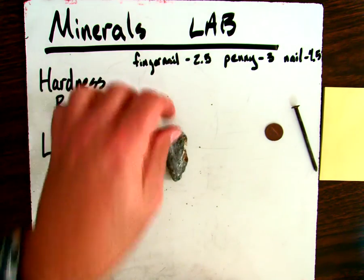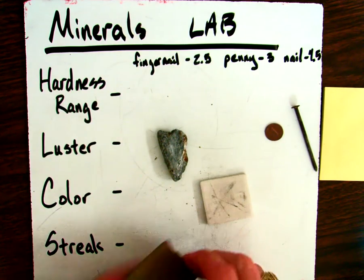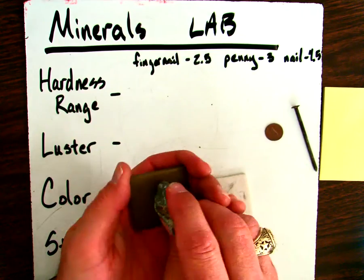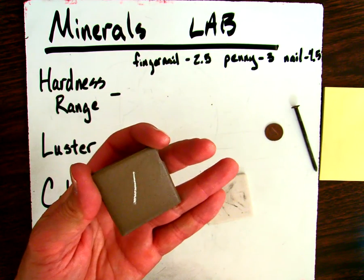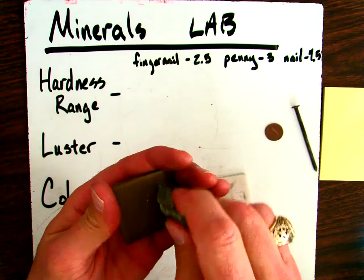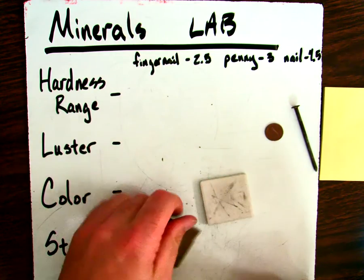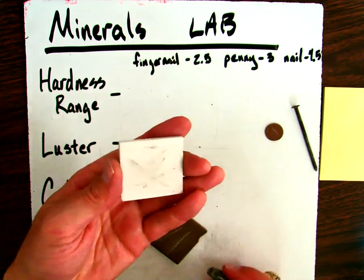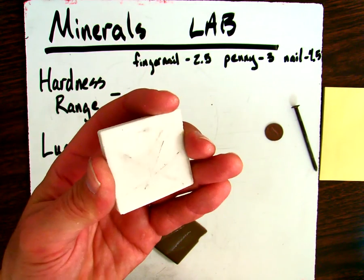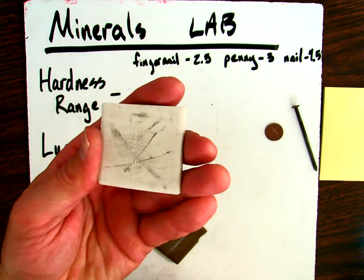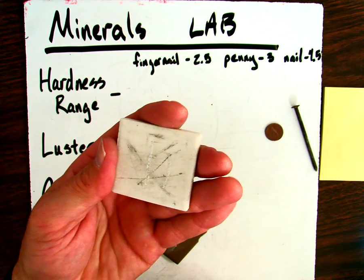And the last thing we're going to test is our streak using our streak plates. We'll go ahead and test it on the brown plate first. You can see a nice streak there. And let's go ahead and test on our white streak plate for a reference. If you tilt it just right, you can see that it leaves a streak on there as well.